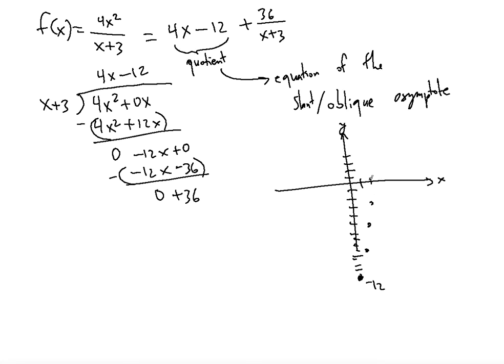And when y is equal to 0, 4x is equal to 12, so that's going to give us x is equal to 3. So basically, I should indicate this as a dashed line, this will be the slant asymptote.